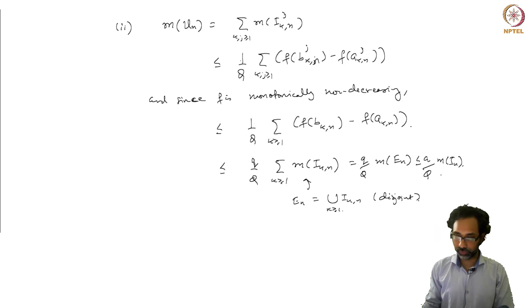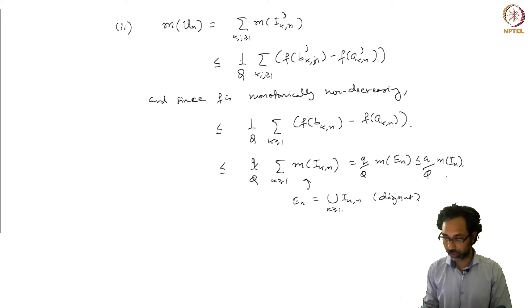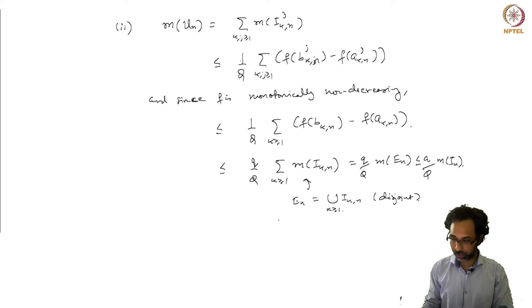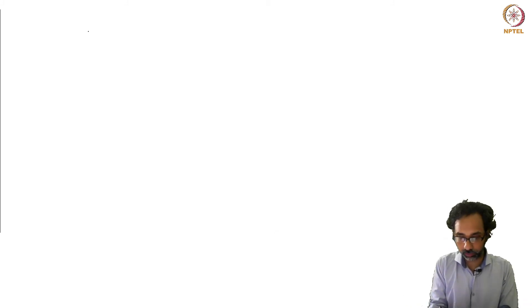So we get our result that m(Un) is less than or equal to small q over capital Q times m(In), and now we can finish the proof.